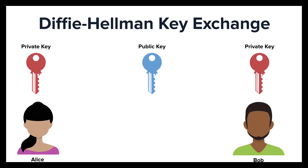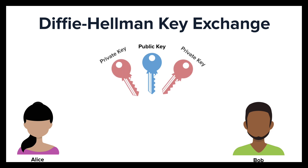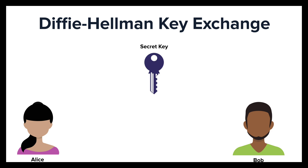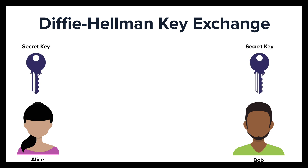One of the earliest known key exchange algorithms is the Diffie-Hellman key exchange. It was one of the first asymmetric key implementations and it was responsible for securing the exchange of keys. A combination of public keys and private keys were used to establish a shared secret key between two people. This ensured that the secret key could not be intercepted, and this secret key was then used to apply symmetric encryption between the two systems.